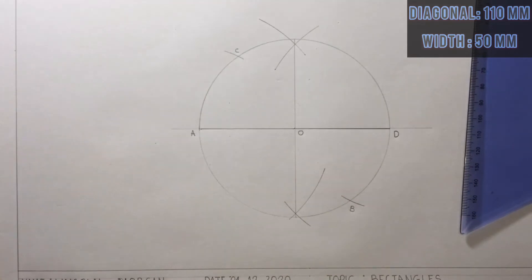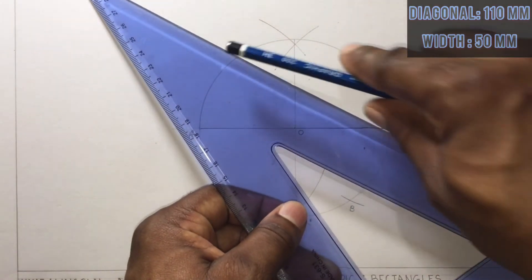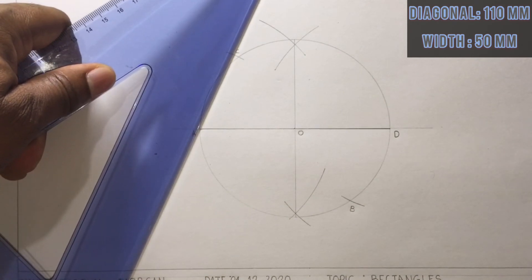I will now draw a line from A to B, B to D, D to C, and C to A to give me my required rectangle.